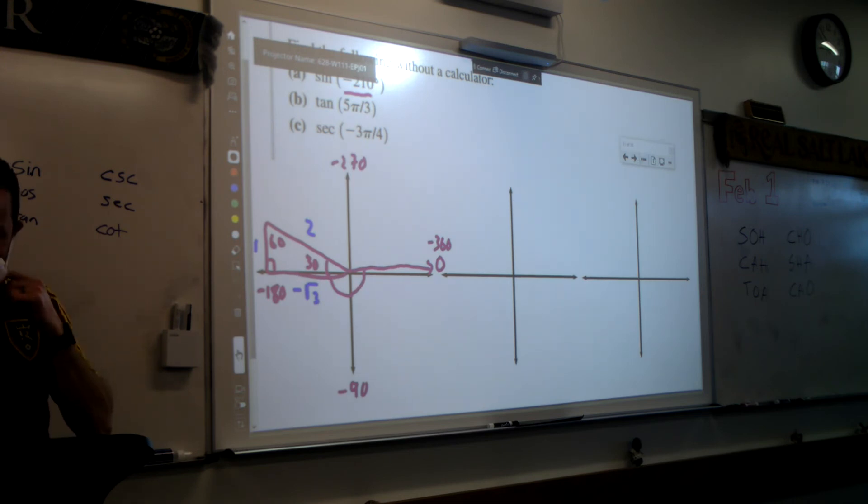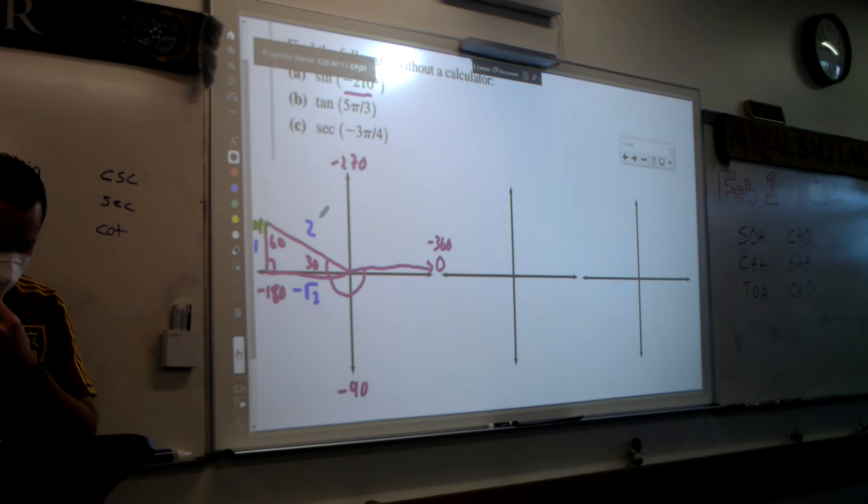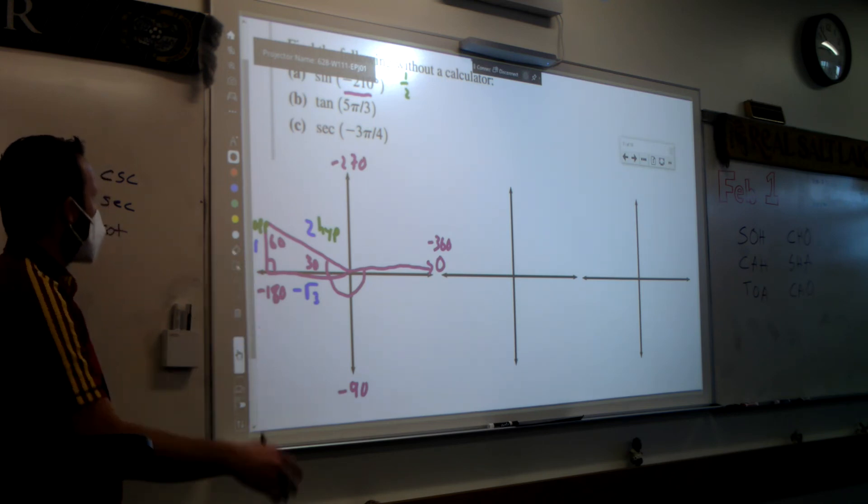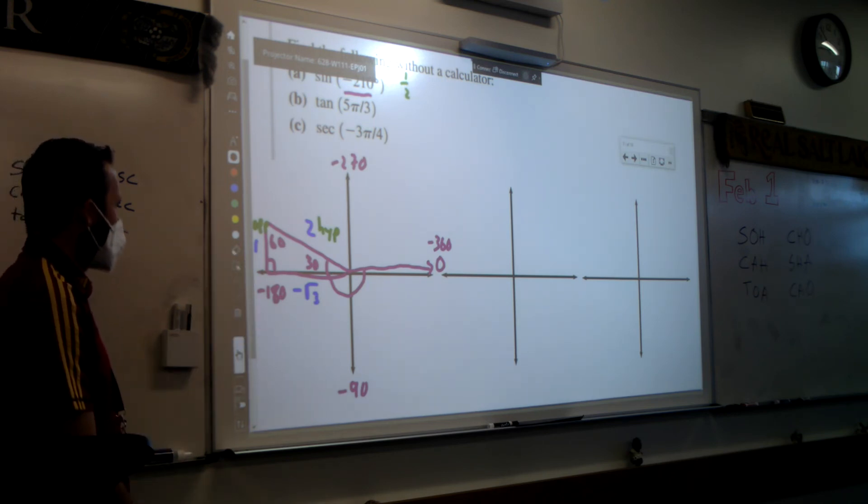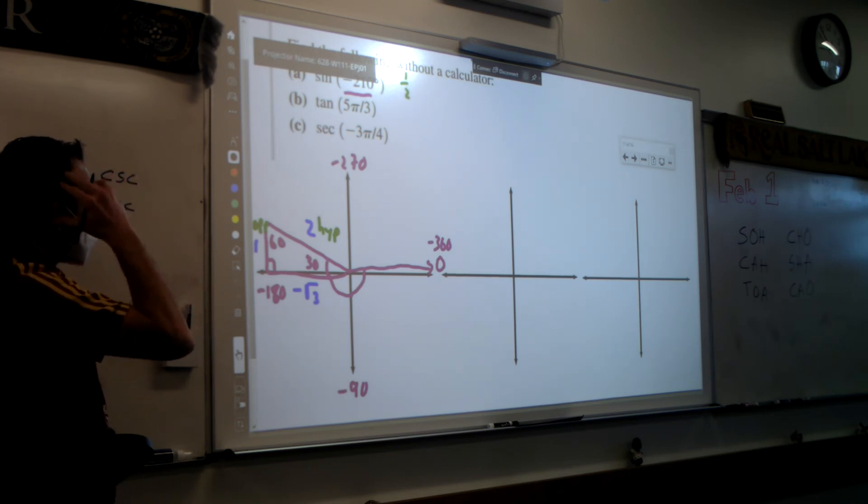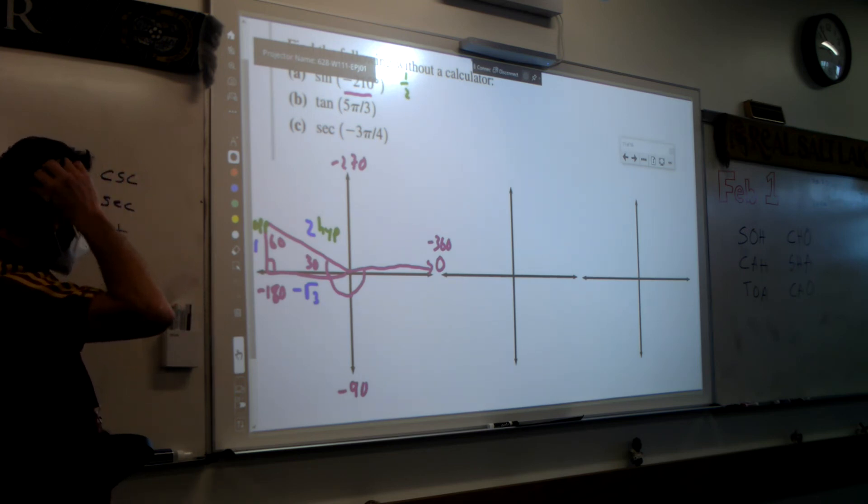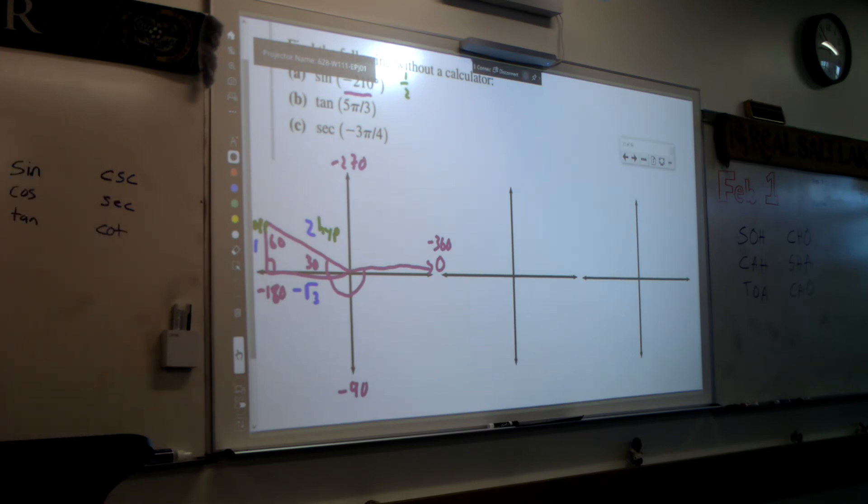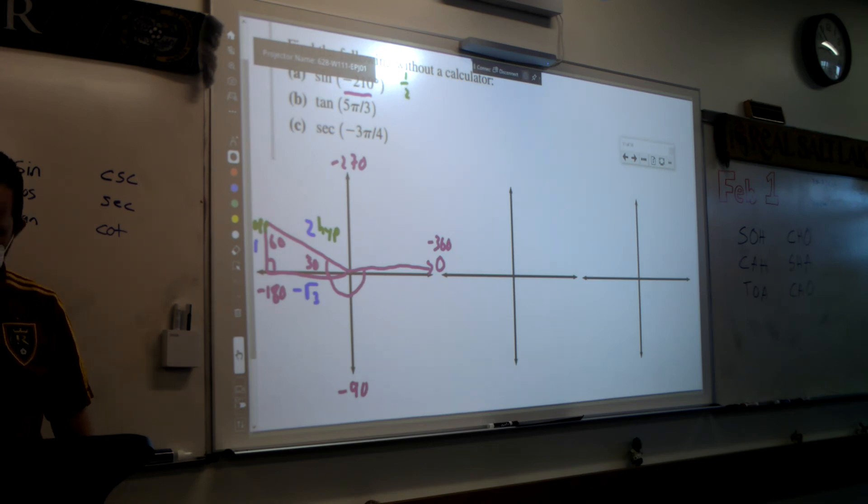Okay, so we want to do the sine. So which trig ratios does sine use? Or which sides does sine use? Opposite and hypotenuse. So if I do negative 270, that's going to give me 1 over 2, so it's just 1 half. Could you check that on your calculator? Do it real quick. Put its sine in negative 210 and see if it gives you 1 half. What'd you get? 1 half? Yeah. Cool.